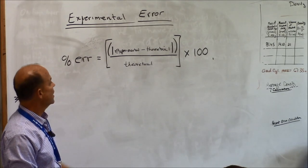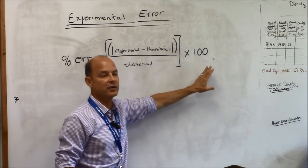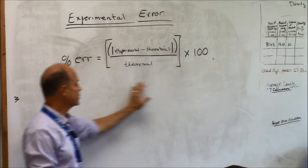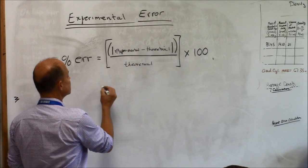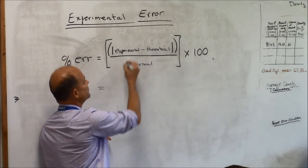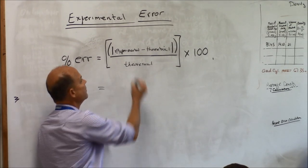When you do this you get a decimal and you multiply it times a hundred so that you can get a percentage. So that's basically all we're doing with the math there. Tyler, what did you and your lab group get for an experimental value for the density of alcohol?